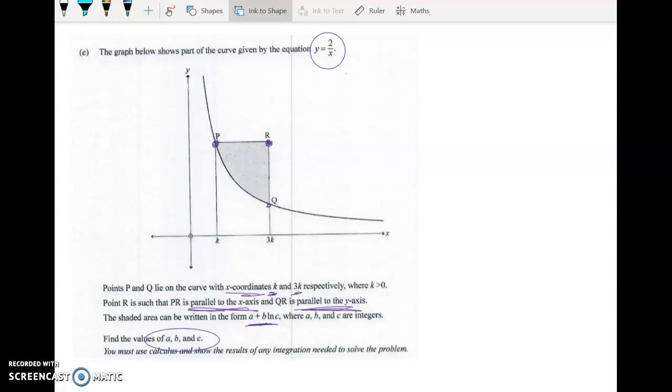The shaded area is going to be most easily found if I do the area of the rectangle and then I take away the area under the curve. So we're going to want to find this integral here. The limits for that are really easy. They're going to be k and 3k. So really the only hard bit of this question is figuring out the area of a rectangle, and we know that that's the base times the height.